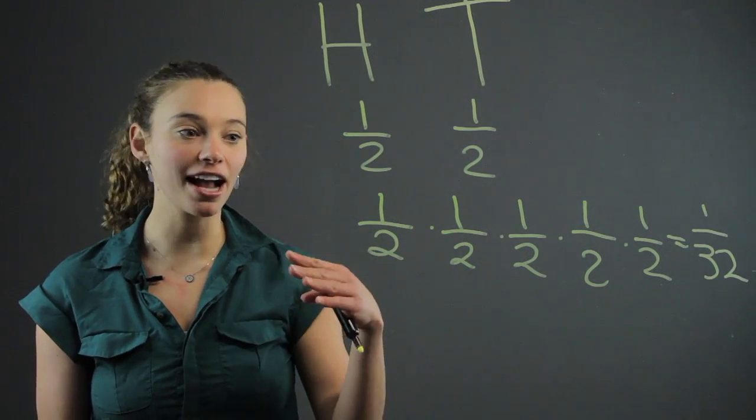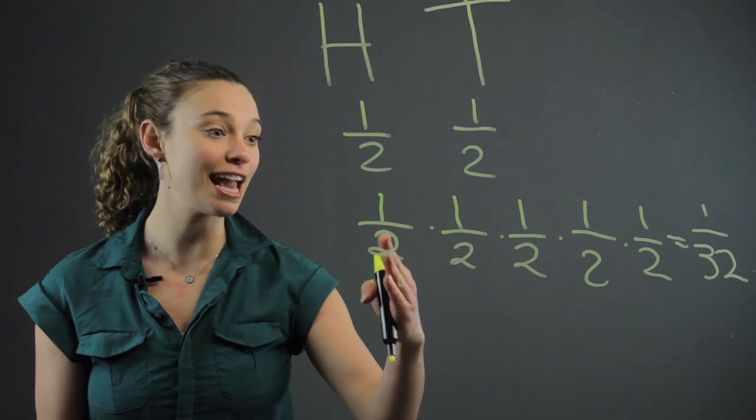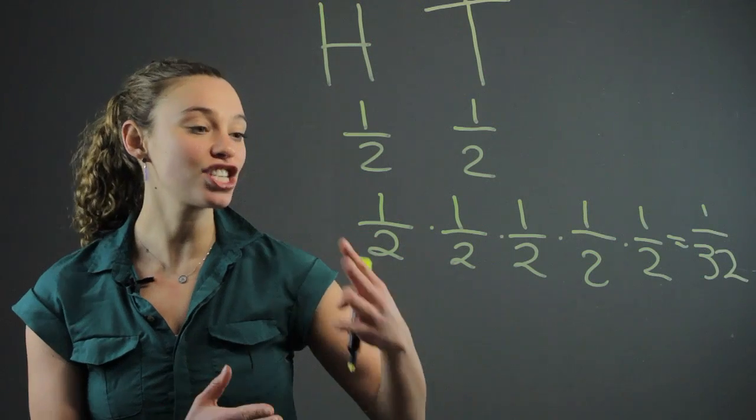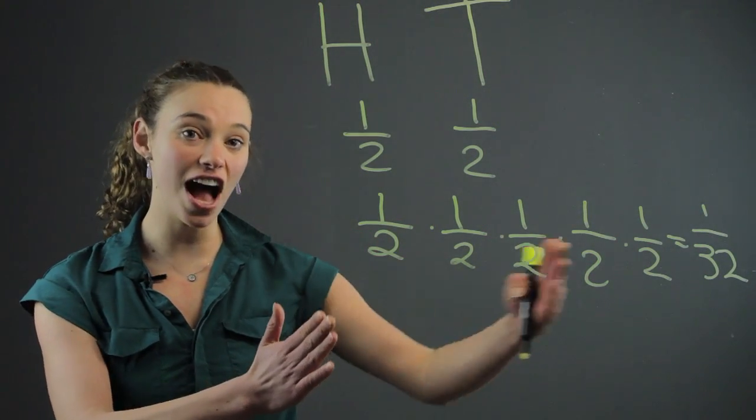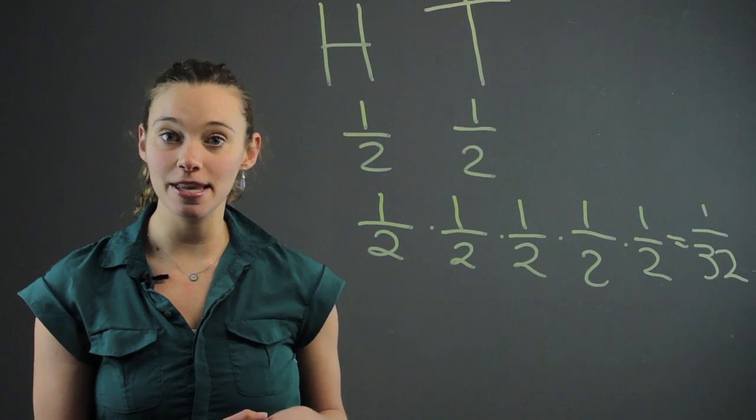But each time you have to go back and say, okay, it's still 50%. The probability is still the same each time, but you're multiplying it together because each time it's that. And you want to get it five times in a row. So that's an example of a probability problem.